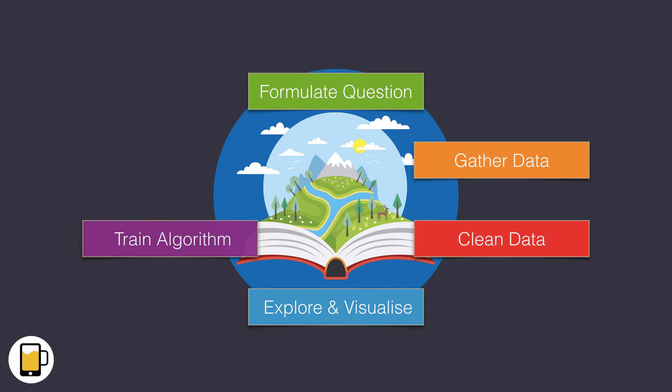After we've done all that, the next step is actually training our algorithm — using our computer to identify patterns in the data. In our case that algorithm will be linear regression. And finally we have to evaluate the results. How did our algorithm do? Did it answer our question? How accurate was it?